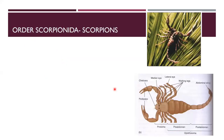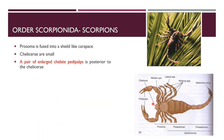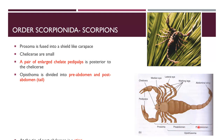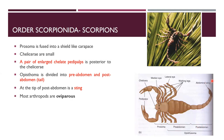Order Scorpionida includes scorpions. The prosoma is fused into a carapace. The chelicerae are small and the pedipalps are large with pincers. The tip of the postabdomen is the sting, which injects poison. Most scorpions are oviparous but some are ovoviviparous and some viviparous.